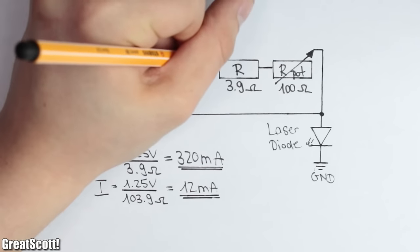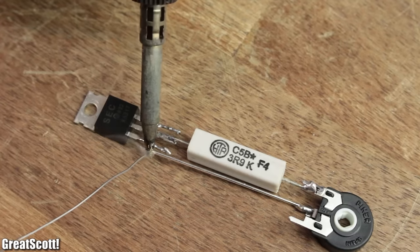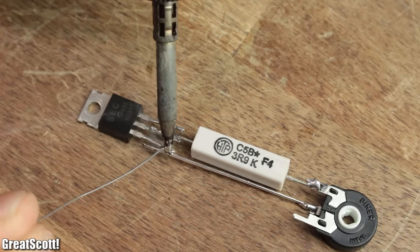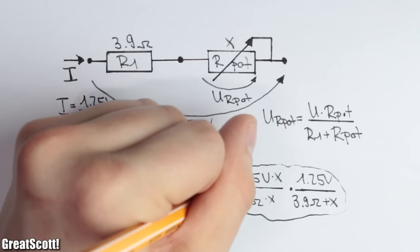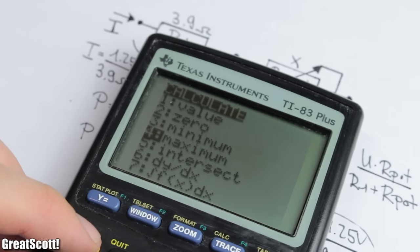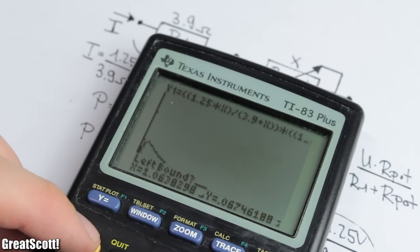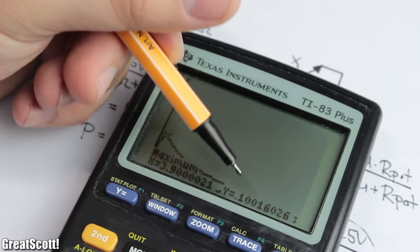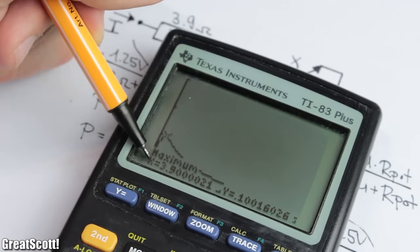And don't worry about destroying the 0.25 watt potentiometer through the relatively big current. I did a couple of calculations beforehand and as it turns out, the maximum power loss through the potentiometer is only 0.1 watts, so perfectly fine.